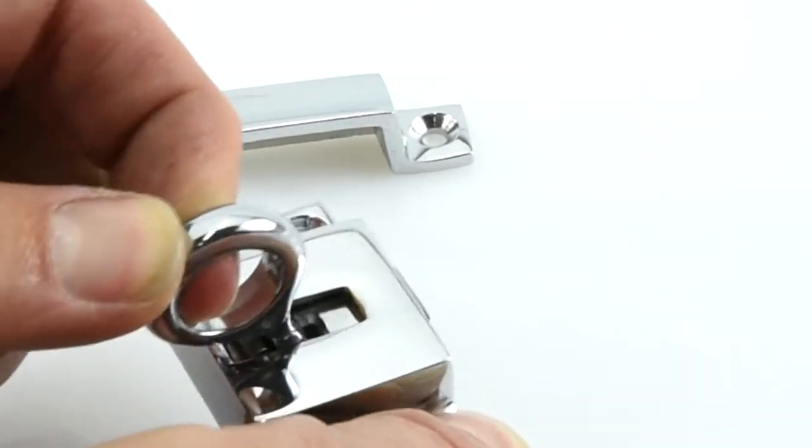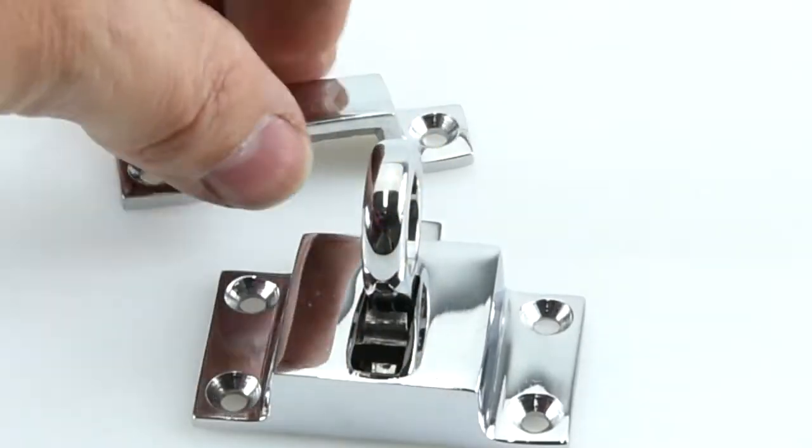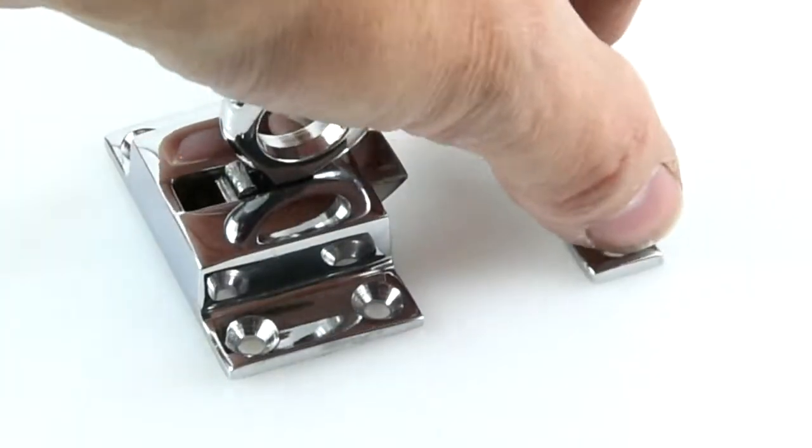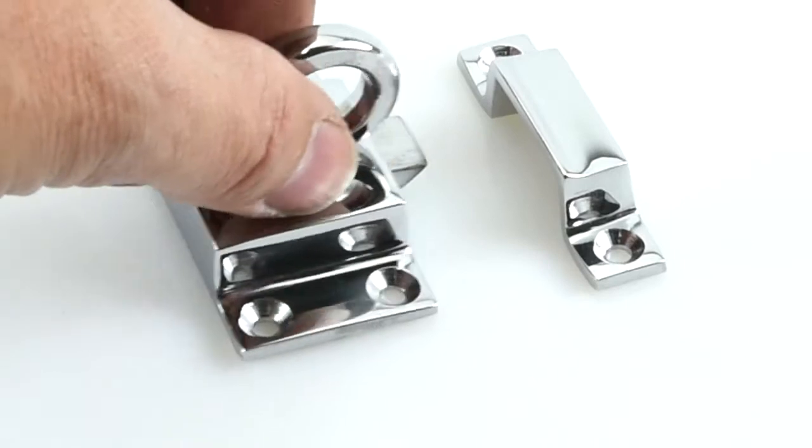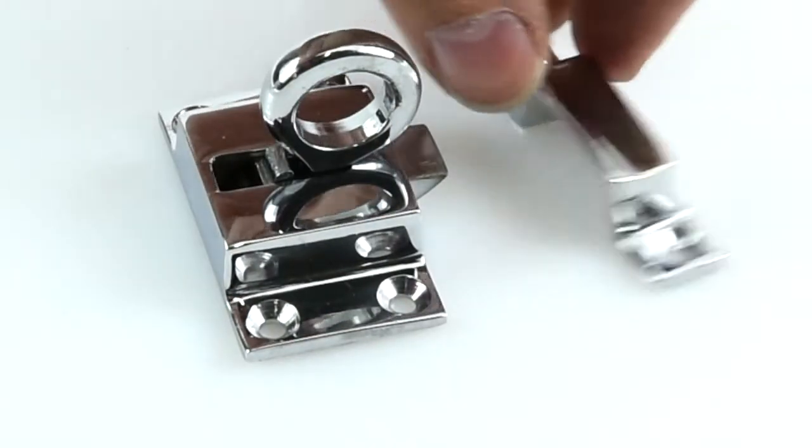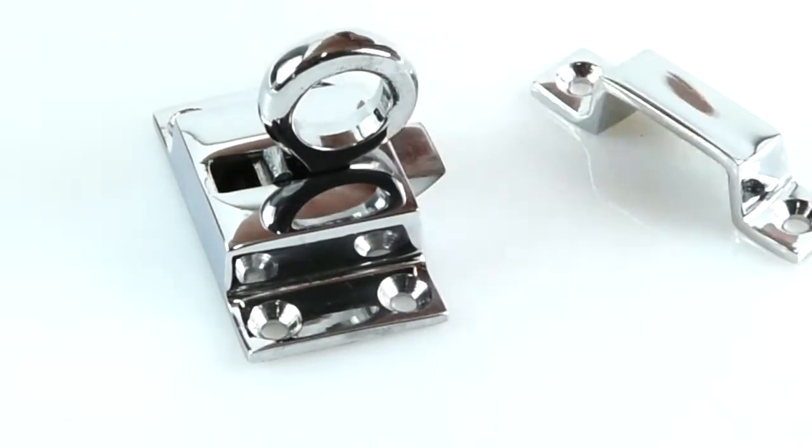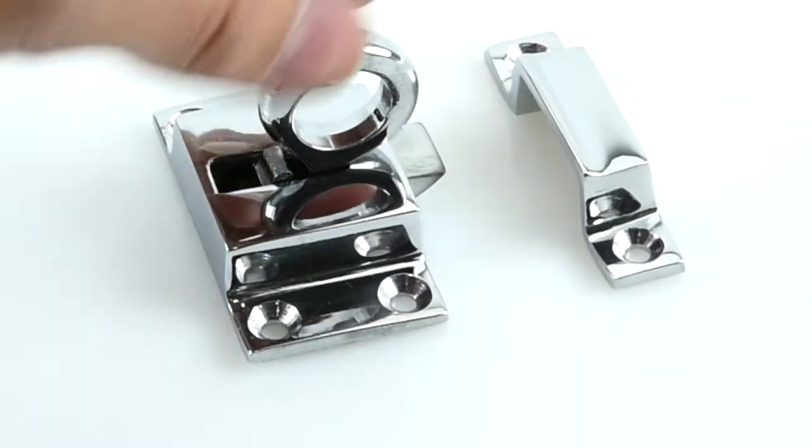It also can come with a mortise plate instead of this box keep, which is just a plate that will go into your window so that the mortise goes into the catch rather than over it as the box keep does.